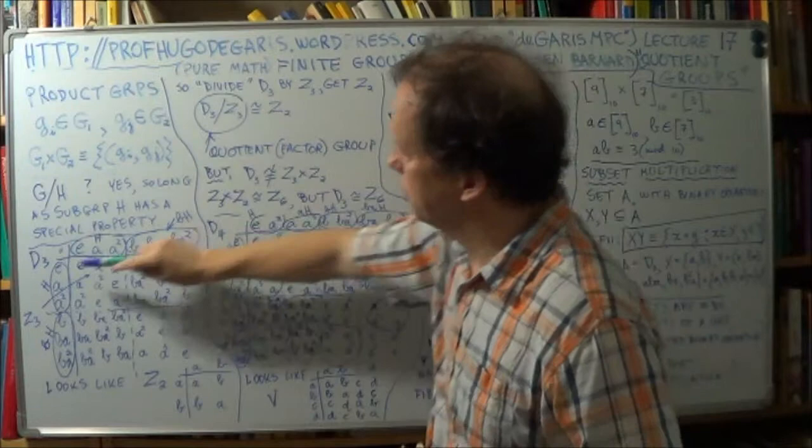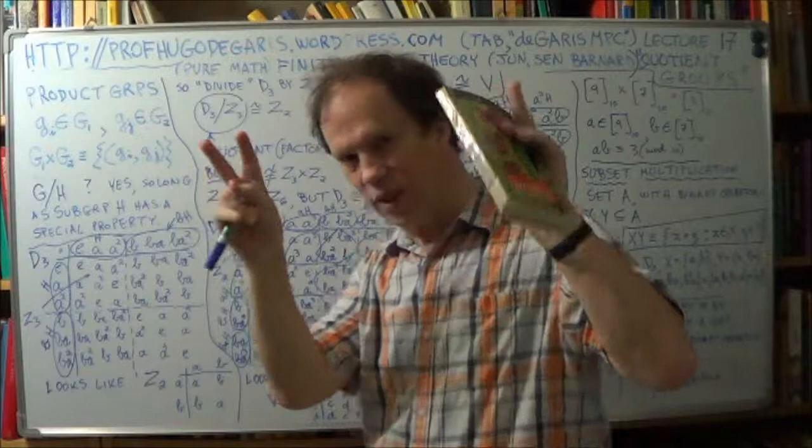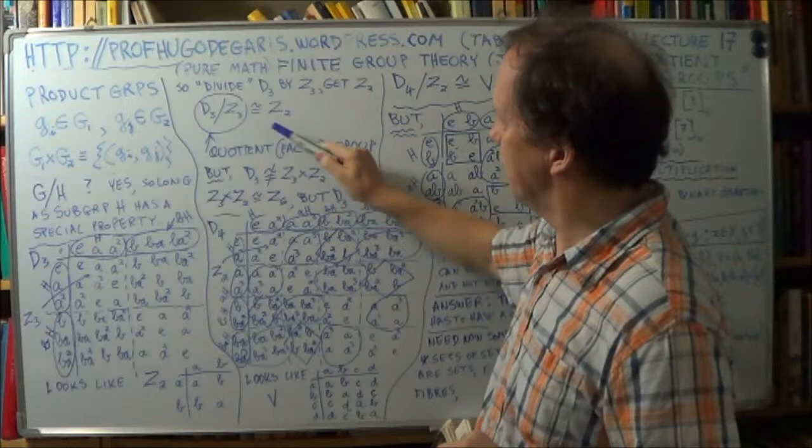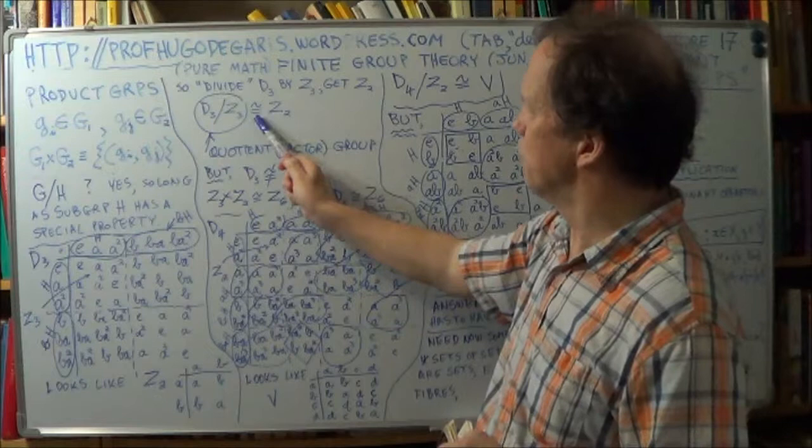In a sense, you're saying, take your original group, which is D3, divide it, that's still within quotes, right? By Z3, so that's your subset H, right? That's your H, your subset. And the result that you get is isomorphic to Z2. It's like this, right? The isomorphism sign.